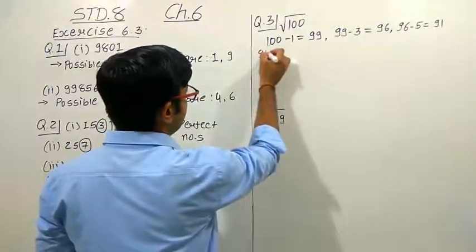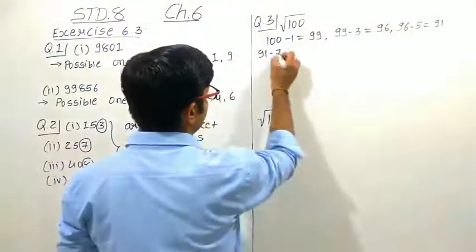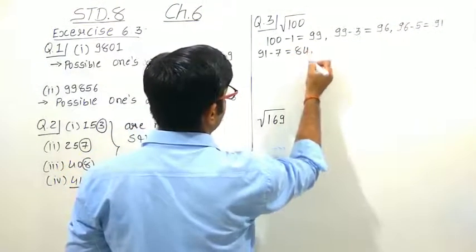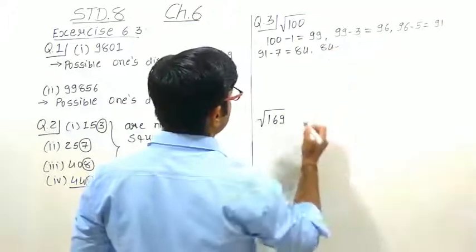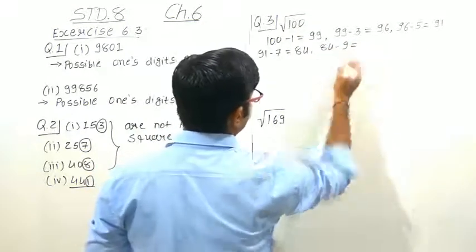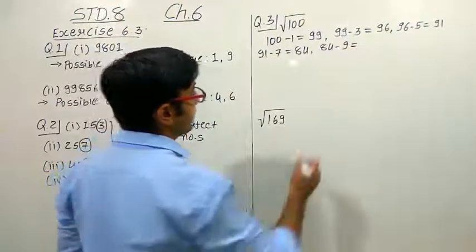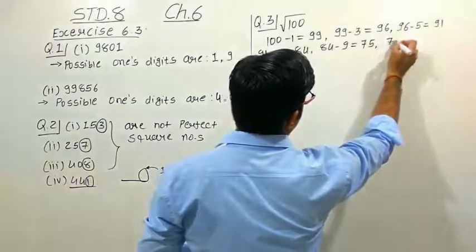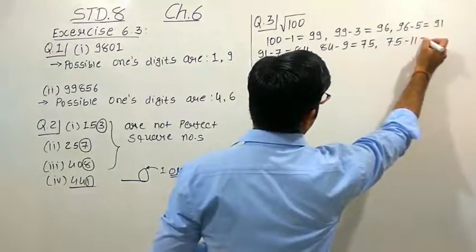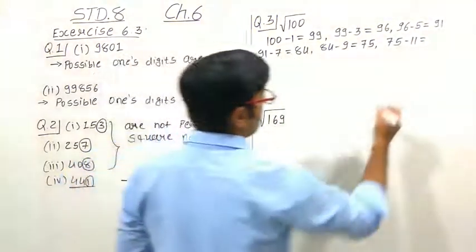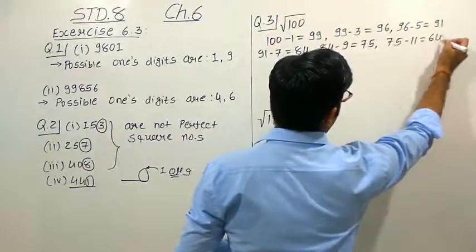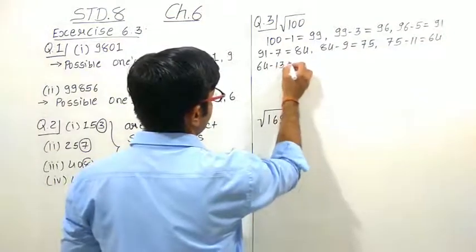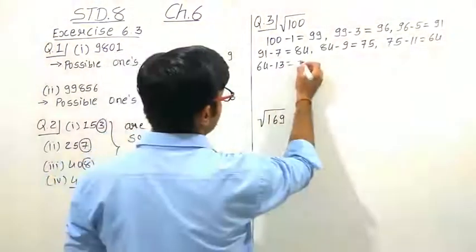Continuing with the repeated subtraction for 100: 91 minus 7 equals 84 (step 4). Then 84 minus 9 equals 75 (step 5). Then 75 minus 11 equals 64 (step 6). Then 64 minus 13 equals 51 (step 7). Then 51 minus 15 equals 36 (step 8).